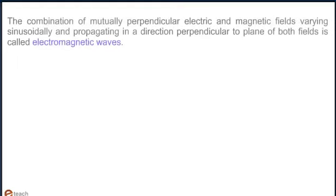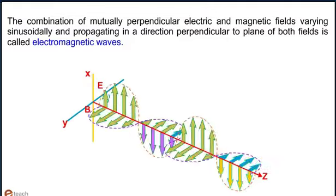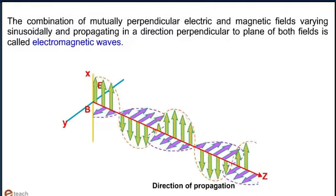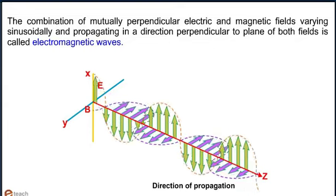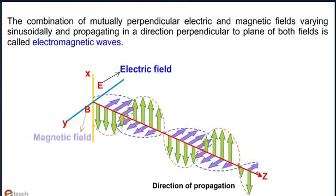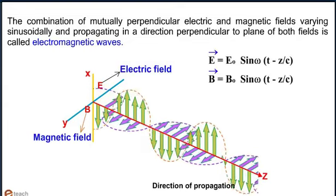The combination of mutually perpendicular electric and magnetic fields varying sinusoidally and propagating in the direction perpendicular to the plane of both fields is called electromagnetic waves. Electric field vector is given by E equals E0 sin omega t minus z over c.